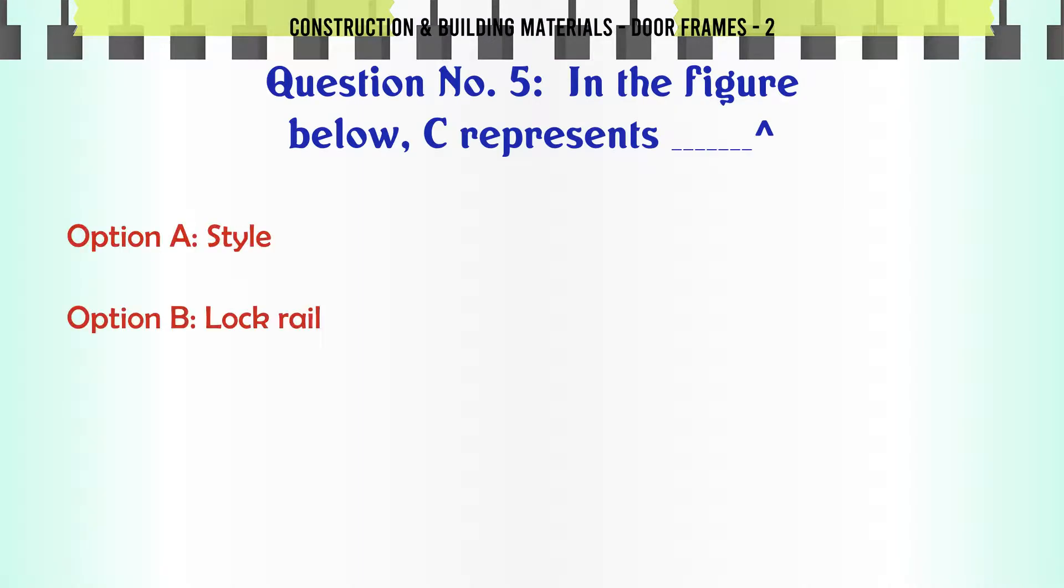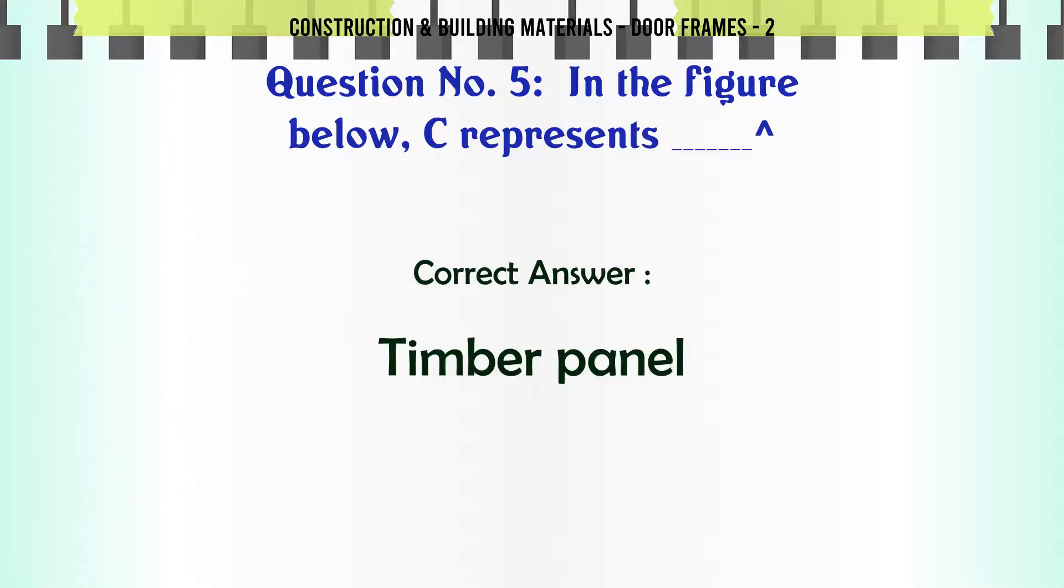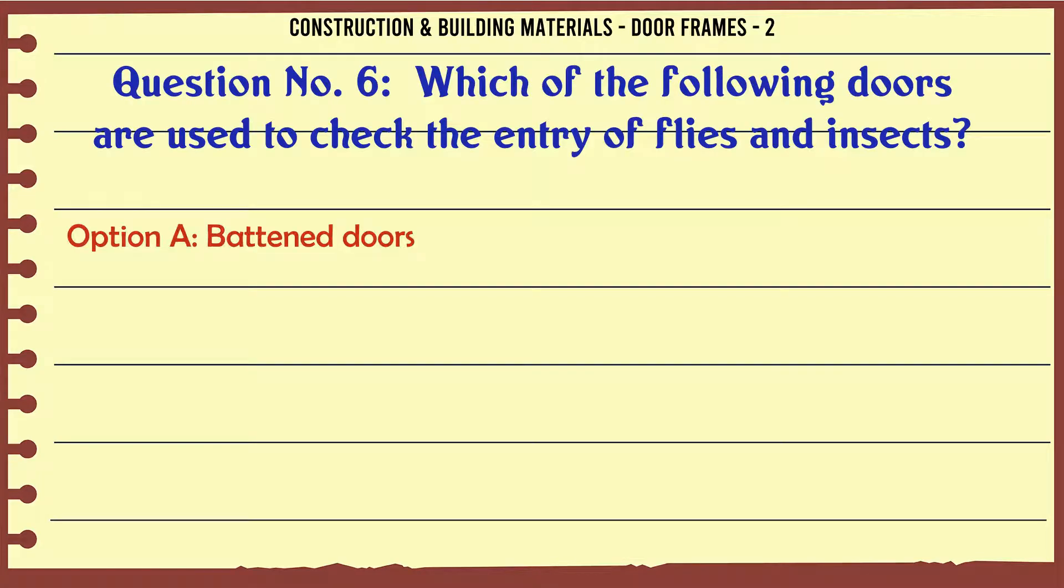Question 5: In the figure below, C represents: A. Stile, B. Lock rail, C. Glass panel, D. Timber panel. The correct answer is timber panel.